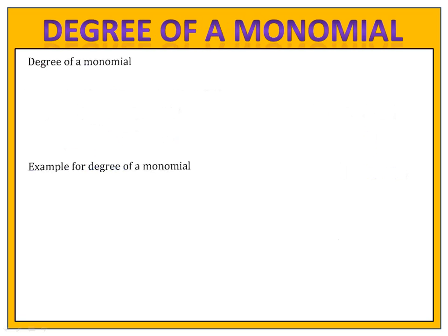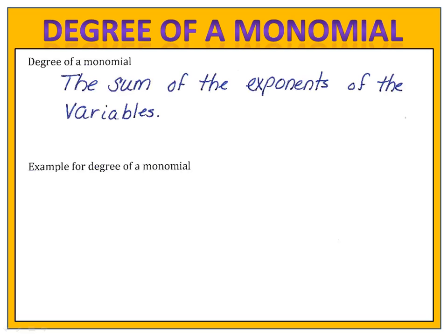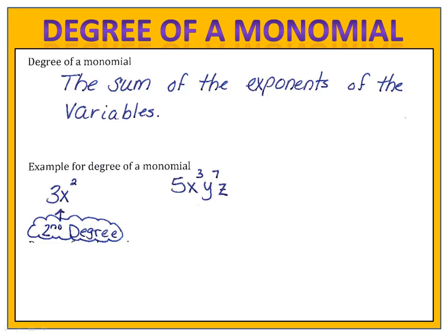When we describe monomials and polynomials, we often talk about their degree. The degree of a monomial is simply the sum of the exponents of the variables. 3x squared is a second degree monomial — the biggest exponent is a 2. 5x to the third, y to the seventh, z is an eleventh degree monomial. We added up the exponents 3, 7, and 1. Remember, the exponent on the z is a 1 because it's not written. That makes it an eleventh degree monomial.